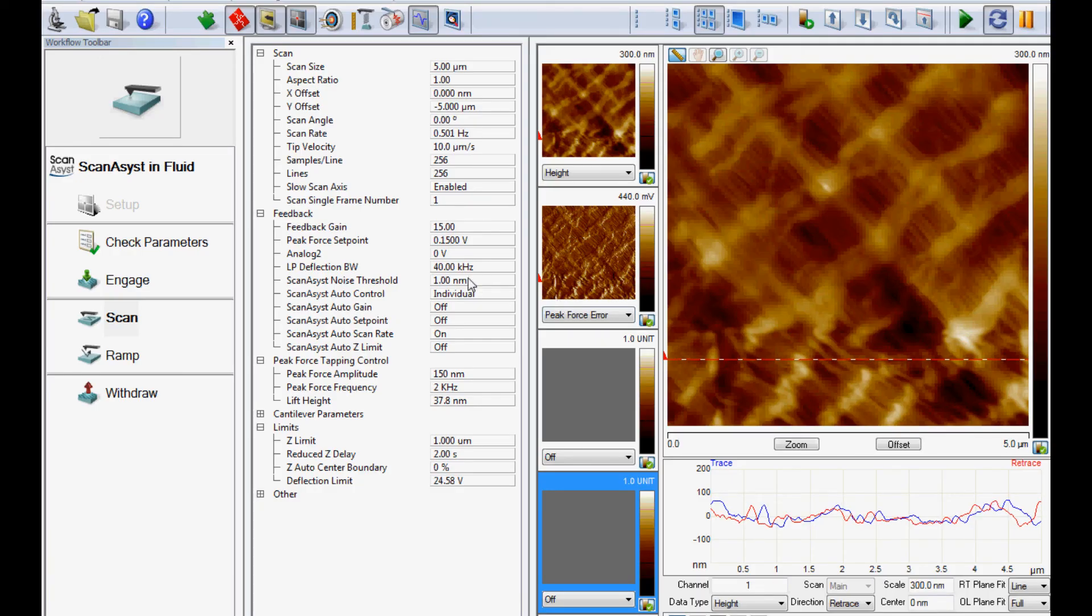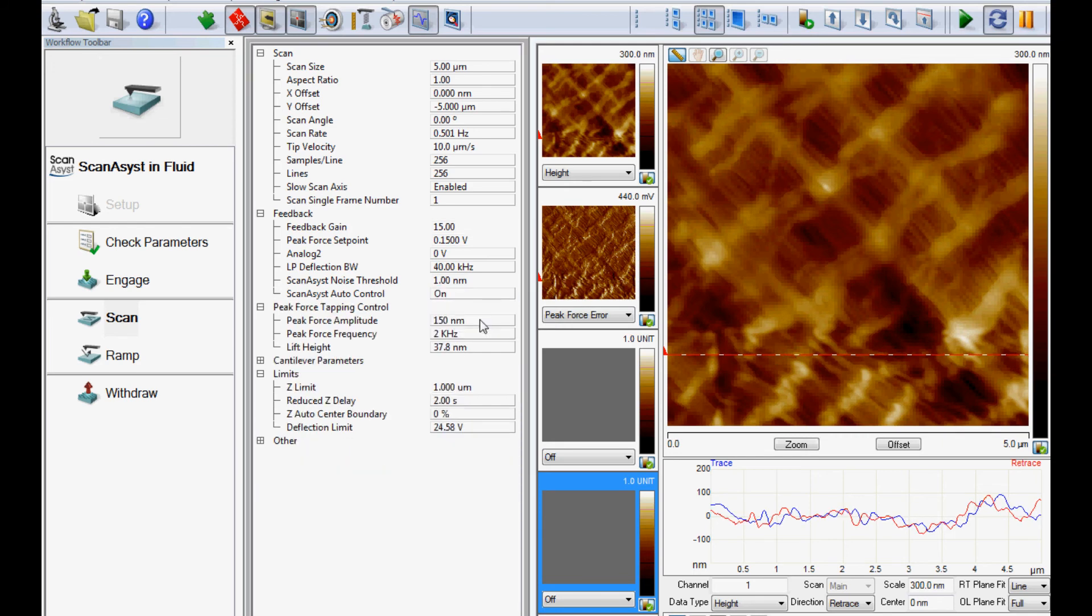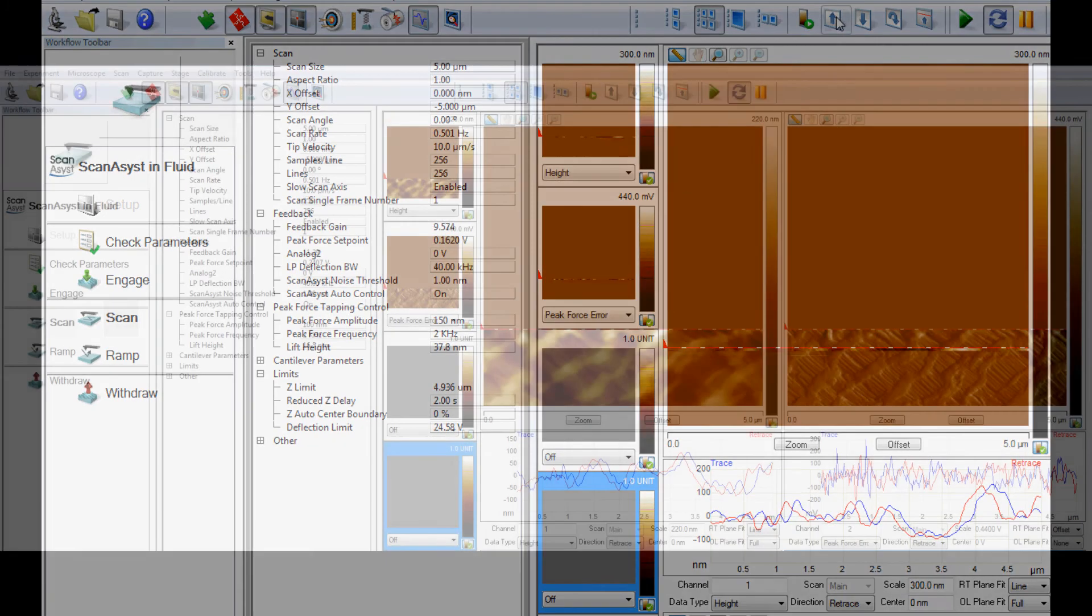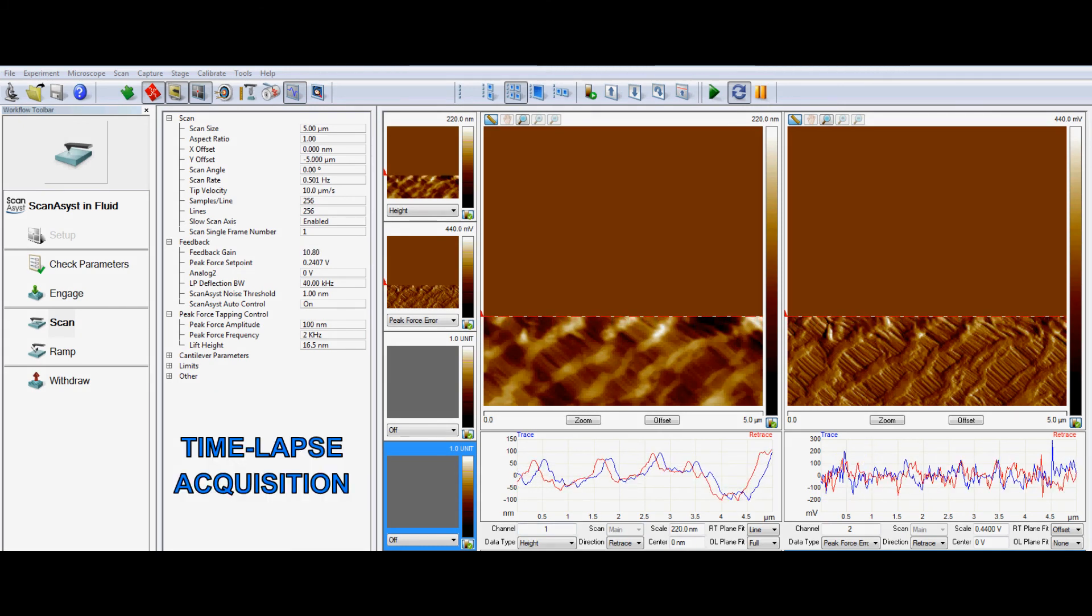Adjusting the scan assist individual parameters may provide some additional improvement in the image, but this step is optional. Auto mode is perfectly acceptable for most samples. Select the desired data channels to display the sample surface features and allow the scans to complete.